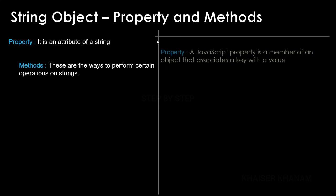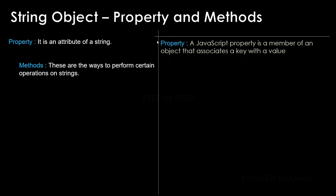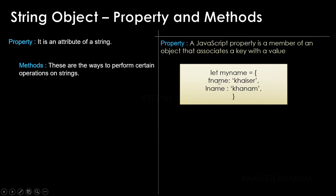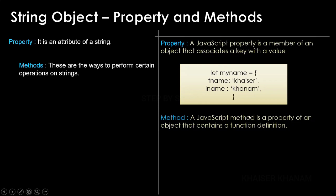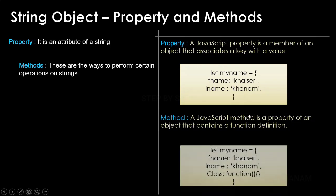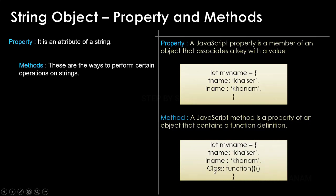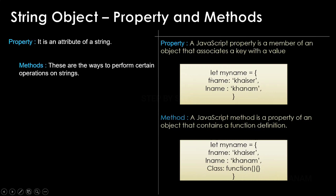In objects, a property is a member that associates a key with a value. For example, `fname: 'kaiser'` — 'fname' is the key and 'kaiser' is the value. An object can have properties like `fname` and `lname`. A method is also a property of an object, but it contains a function definition. When a property contains a function, it is called a method; otherwise it is a plain property.